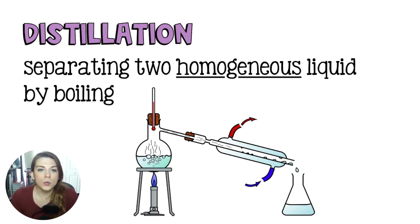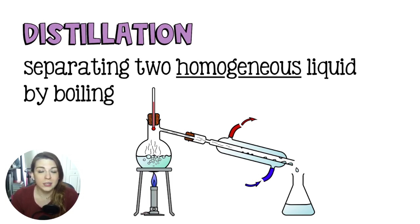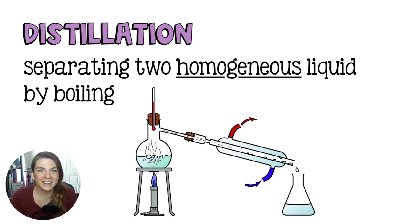We would use distillation if we were separating homogeneous liquids, something like water and alcohol. Those two liquids mix very well, so the resulting mixture is homogeneous — you can't visually see where the water is and where the alcohol is. Because these two liquids have different boiling points, we would distill them.